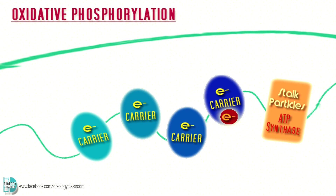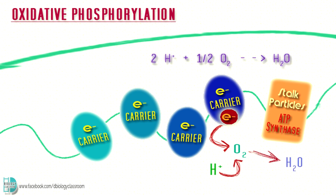The electrons at the end of the electron transport chain are transferred to the final electron acceptor, oxygen. The addition of protons leads to the formation of H₂O.